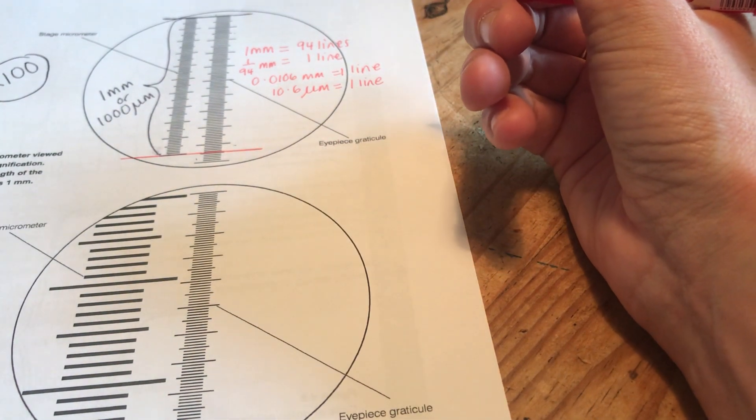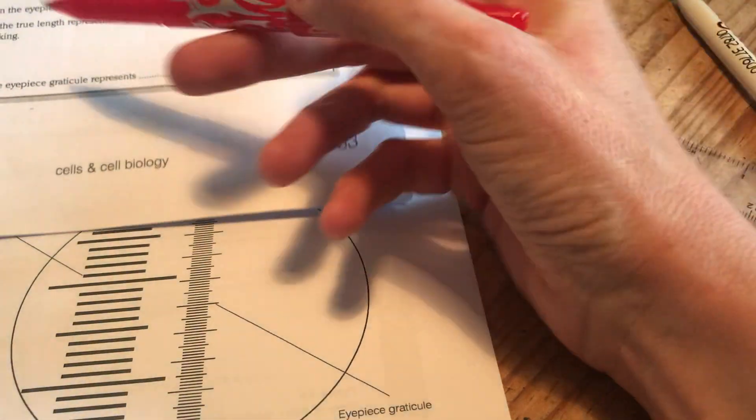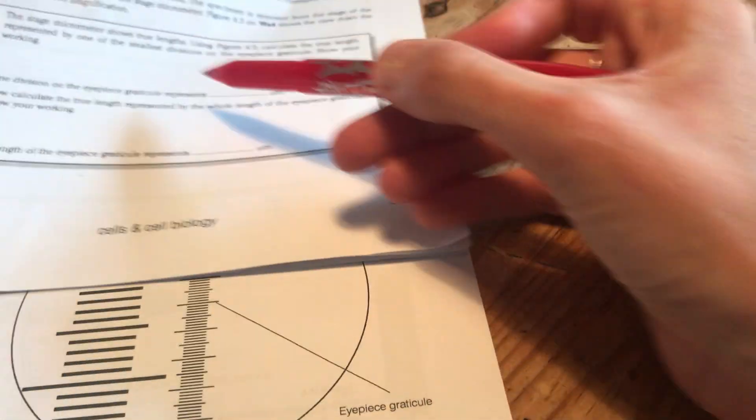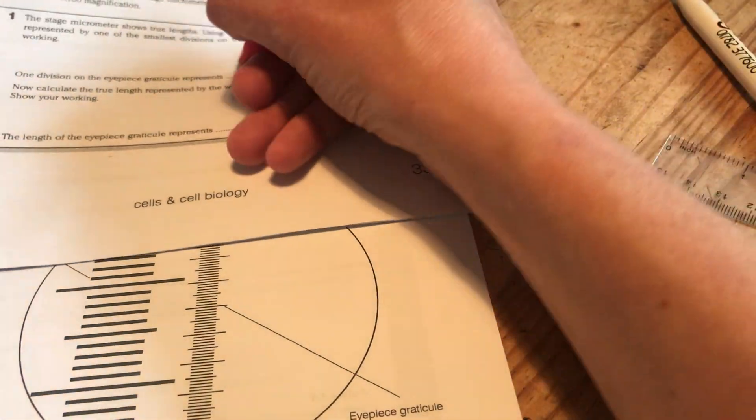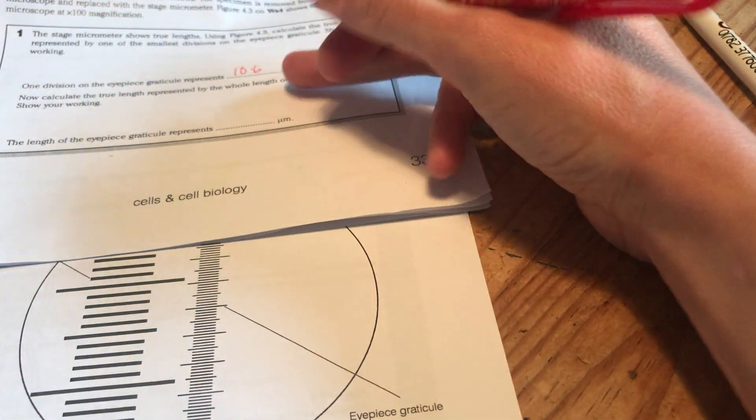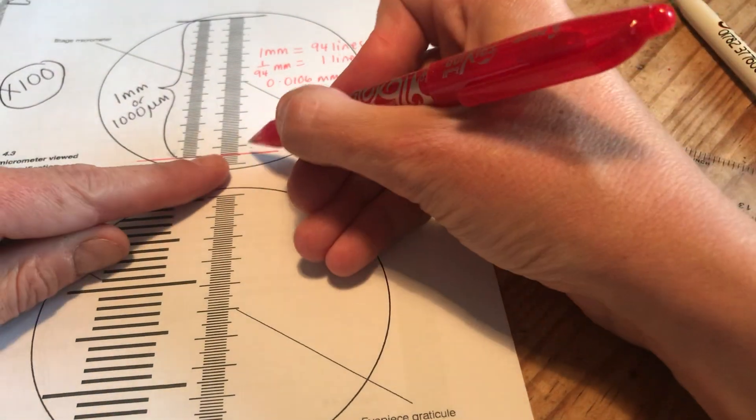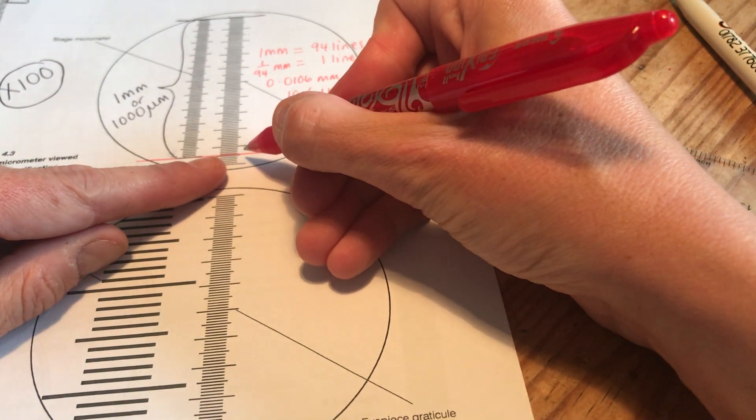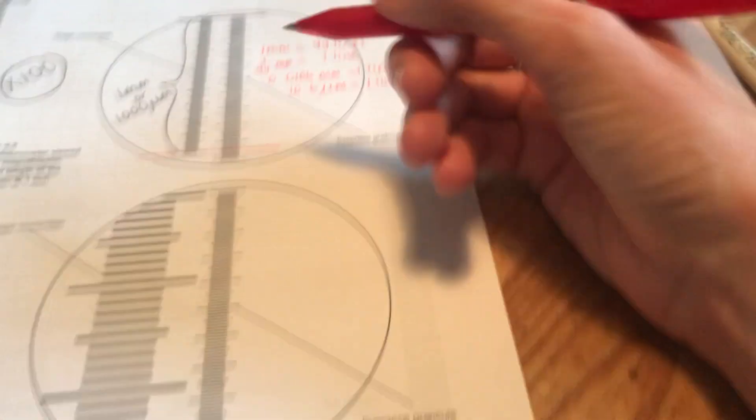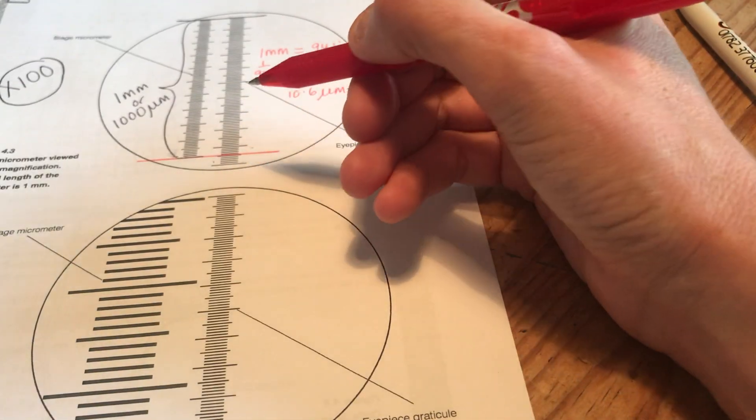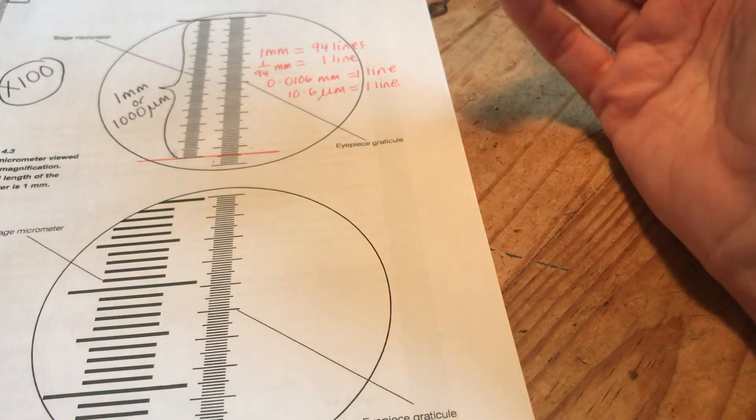So that was my first question. It said how much does one division on the eyepiece graticule represent? It represents 10.6 micrometers. You might get a little bit of a different answer to that depending on which of those lines you've chosen. I've gone for 94. You might go for 95. You might be more precise and say it's worth 94 and a half lines. The closer you get the more accurate you'll be.